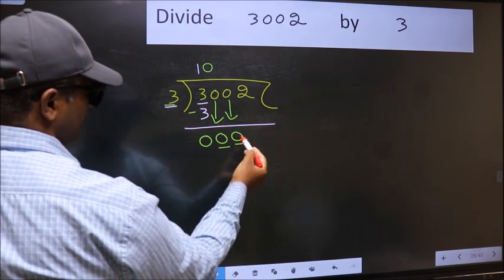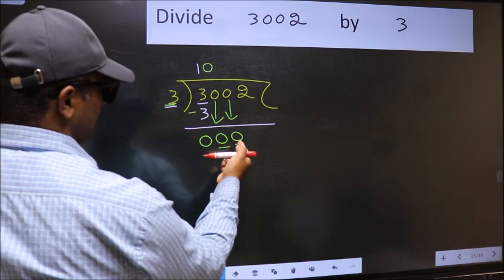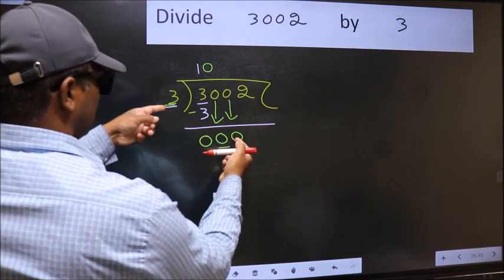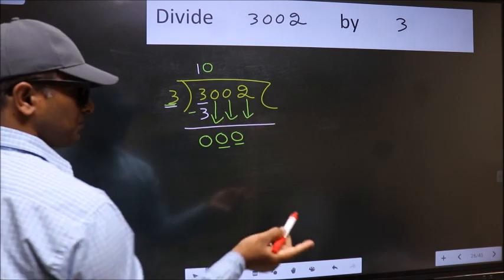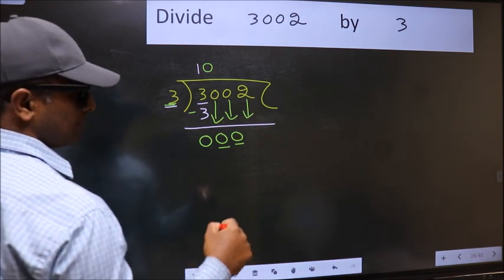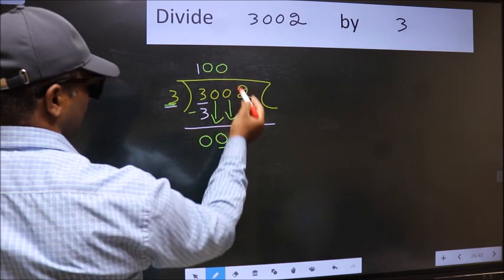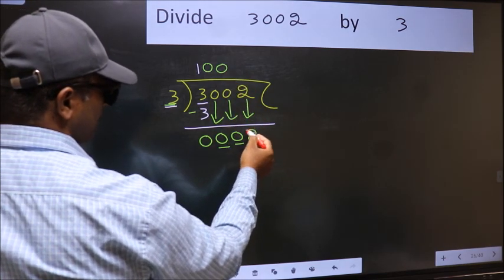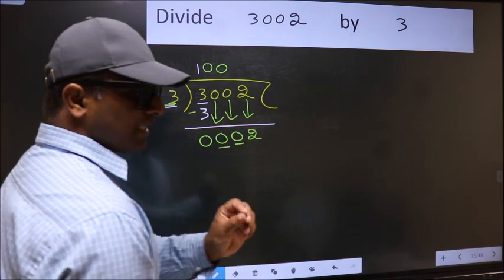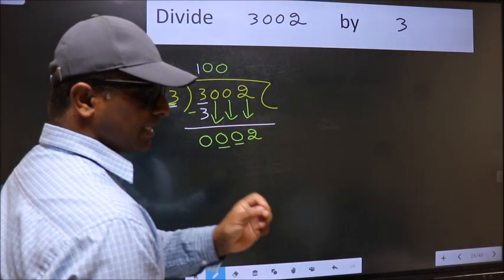Now here we have 0 and here 3. 0 is smaller than 3, so we should bring down the beside number. And the rule to bring down the beside number is we should put 0 here. Then only we can bring down this number. After this step, the mistake happens.